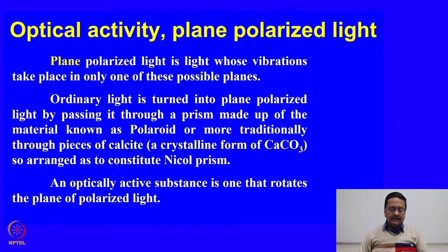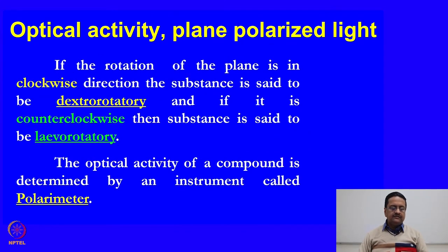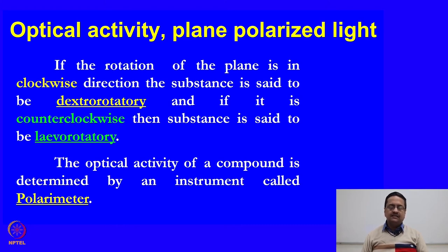An optically active substance is one that rotates the plane of plane polarized light. If the rotation of this plane is in the clockwise direction, then the substance is said to be dextrorotatory. And if it is counterclockwise, then the substance is said to be levorotatory.